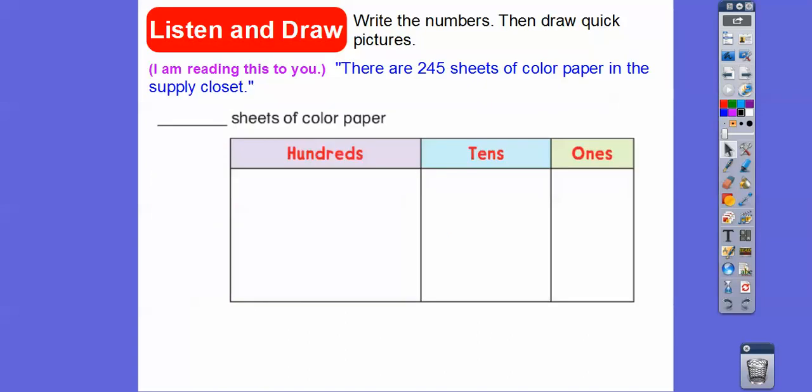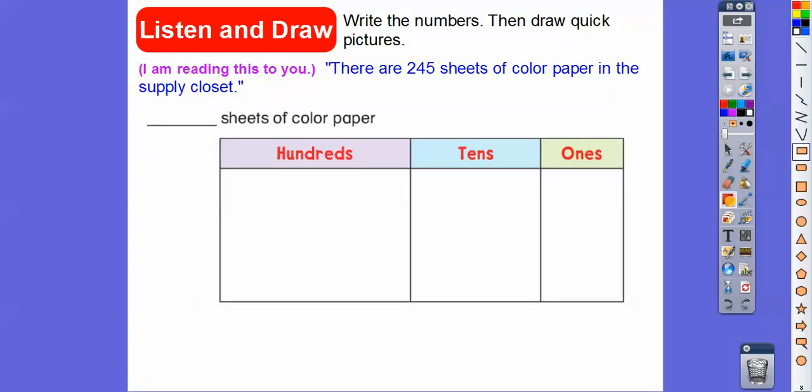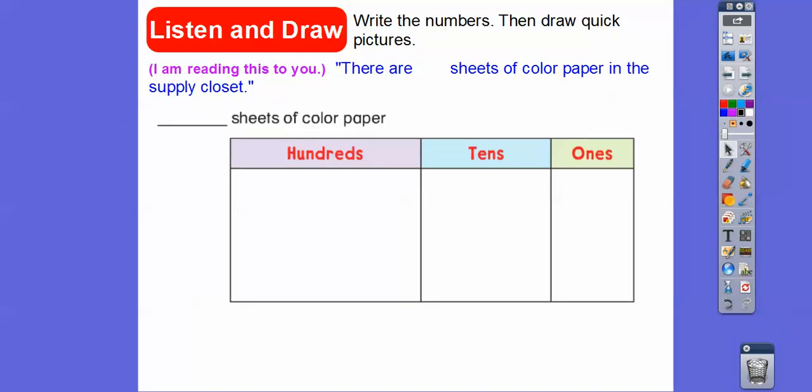So I'm supposed to read this to you. So there are 245 sheets of colored paper in the supply closet. And we're supposed to write the number. So we're going to write the number 245 right here and then draw a quick picture. Let's go ahead and write 245. There's 245. This is in the ones spot. This is the tens spot. This is the hundreds spot.